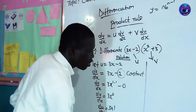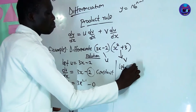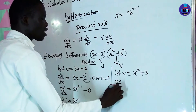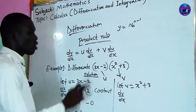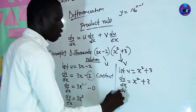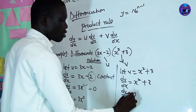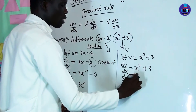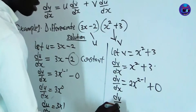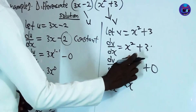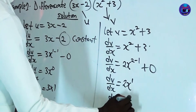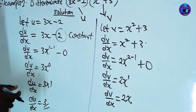Now let v be x squared plus 3. Then dv/dx: the power 2 comes down, giving 2x, and 2 minus 1 equals 1. The constant 3 gives zero. So dv/dx equals 2x.